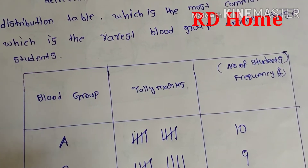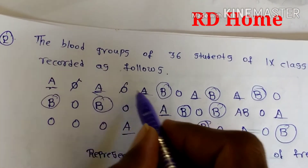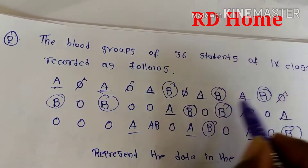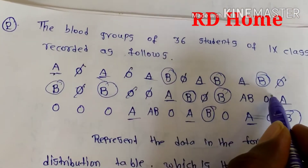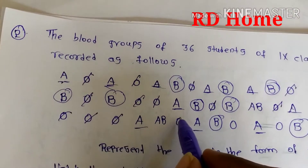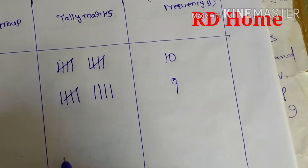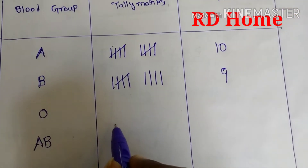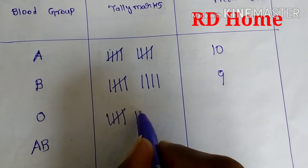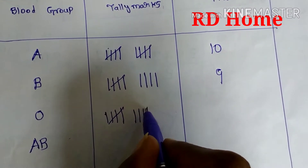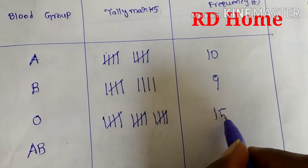In the same way, let's count blood group O. How many O's are there? 1, 2, 3, 4, 5, 6, 7, 8, 9, 10, 11, 12, 13, 14, 15. So we write 15 tally marks: 1, 2, 3, 4, 5, 6, 7, 8, 9, 10, 11, 12, 13, 14, 15. The frequency for blood group O is 15.